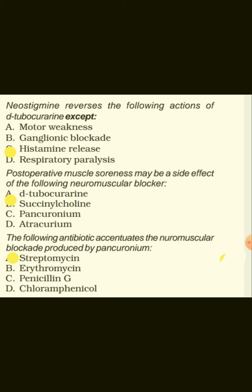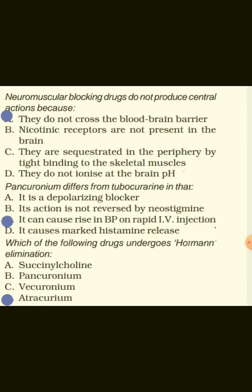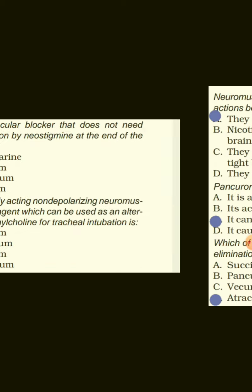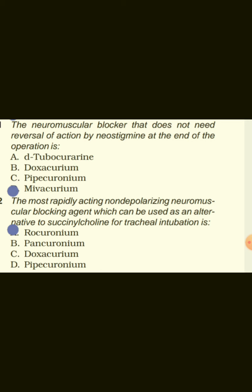Streptomycin is the antibiotic that accentuates the neuromuscular blockade produced by pancuronium. Neuromuscular blocking drugs do not produce central actions because they do not cross the blood-brain barrier. Pancuronium differs from tubocurarine in that it can cause a rise in blood pressure on rapid IV injection. Mivacurium is the neuromuscular blocker that does not need reversal by neostigmine at the end of the operation. Rocuronium is the most rapidly acting non-depolarizing neuromuscular blocking agent and can be used as an alternative to succinylcholine for tracheal intubation.